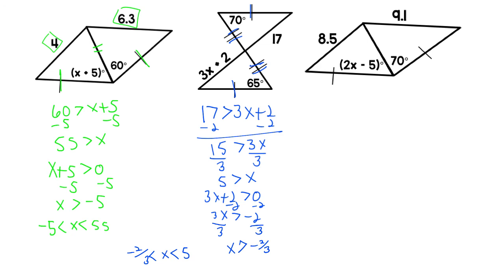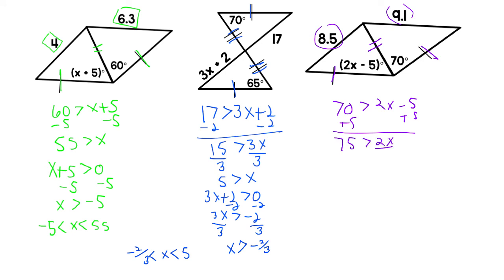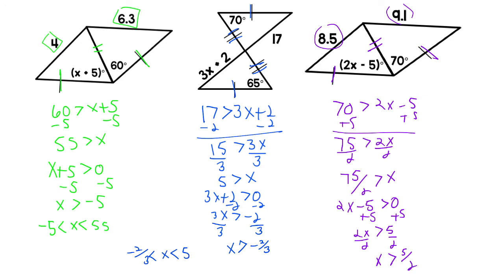Last one: we have congruent sides and another side congruent to itself. Side lengths are 9.1 and 8.5 — 9.1 is bigger, so 70 is greater than 2X minus 5. Solving: 75 is greater than 2X, so 75 over 2 is greater than X. We also know 2X minus 5 must be greater than 0, giving X is greater than 5 over 2. Compound inequality: 5 over 2 is less than X is less than 75 over 2. I hope this makes sense — hope you're doing amazing and I hope to see you soon.